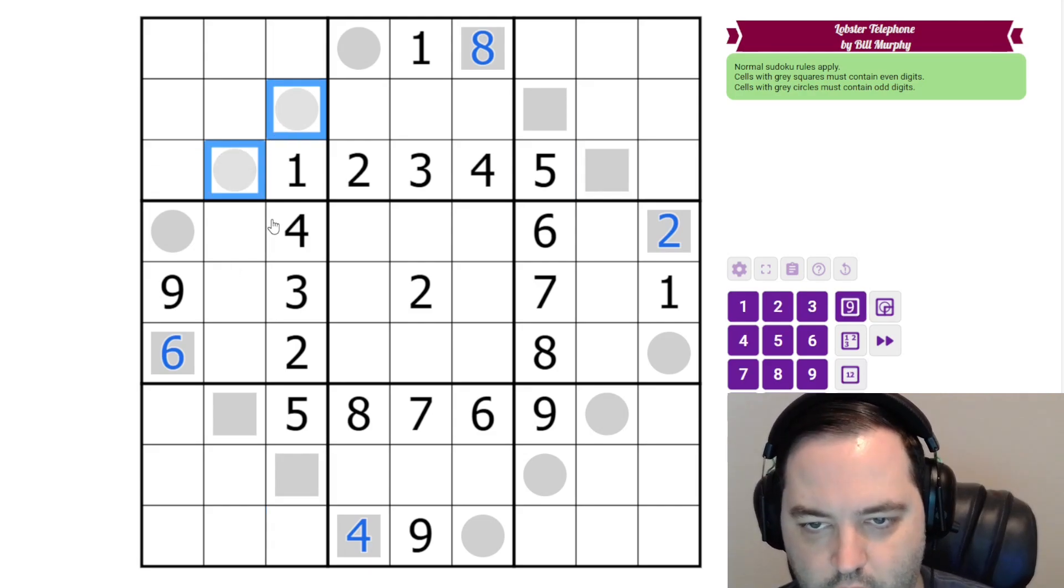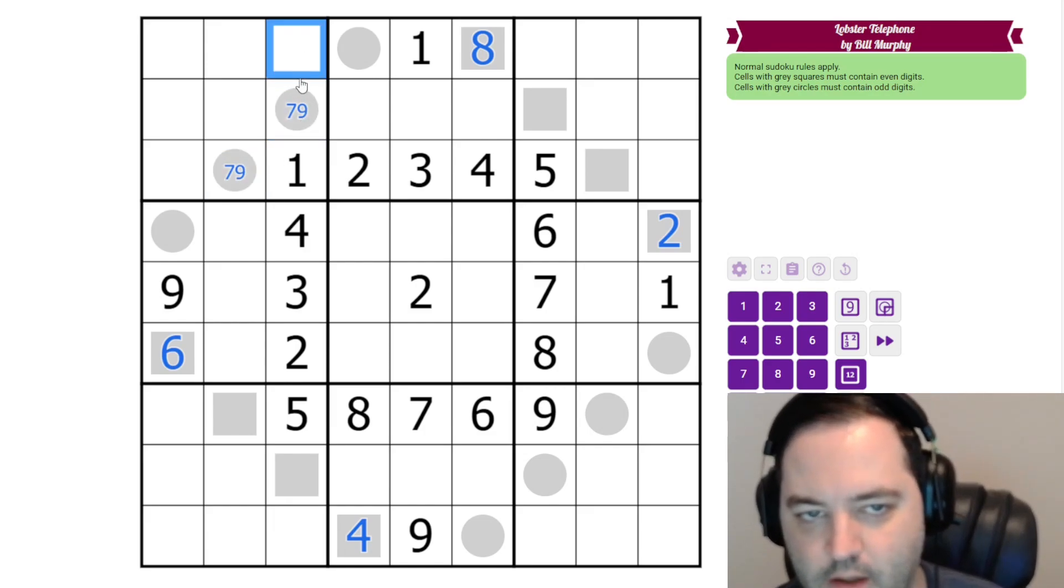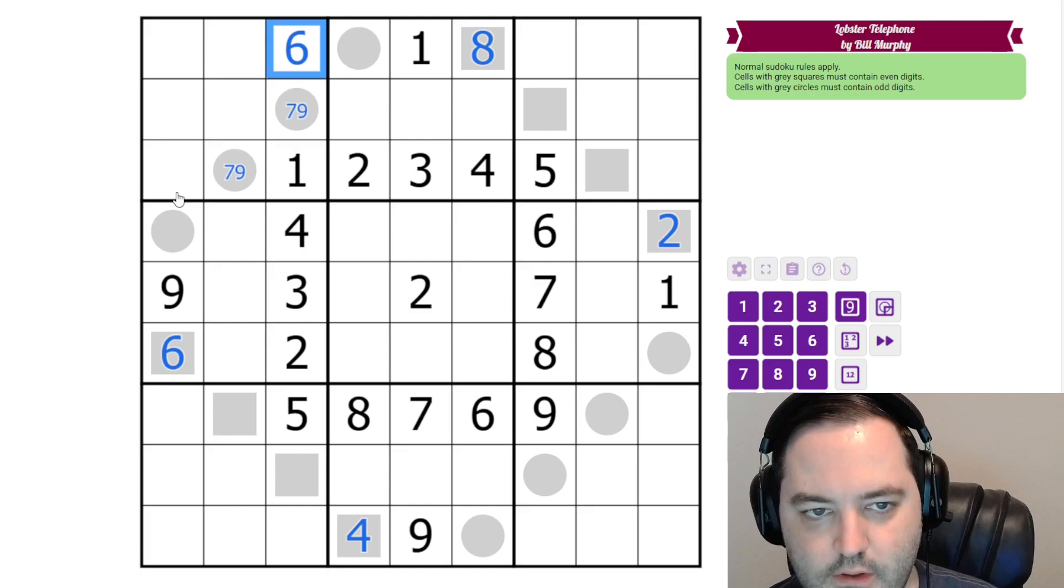Both of these are odd though, so these are from seven and nine. And that gives us a seven, nine pair. So what is this? It's not seven, nine, because we have a pair. And we have one, two, three, four, five. And we have an eight here. So this must be six.